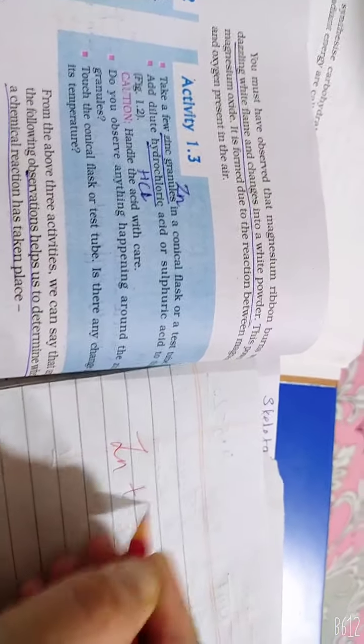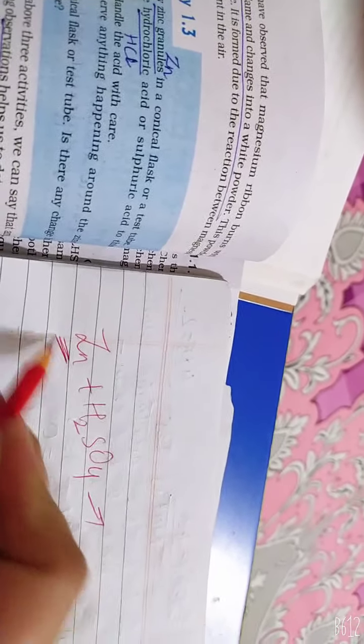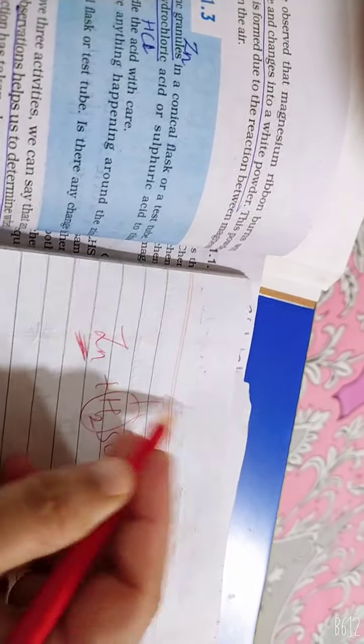I am explaining the reaction here. Zn plus H2SO4 gives displacement reaction. Zinc is more reactive. It is displaced hydrogen. It is removed.